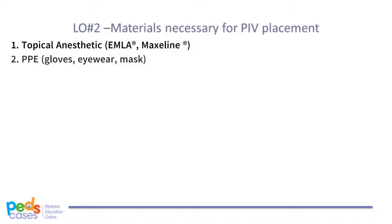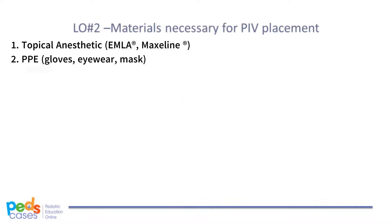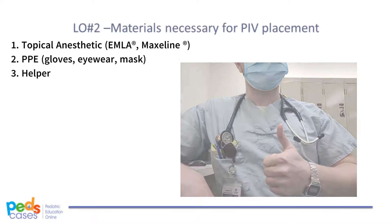Second, ensure you have proper personal protective equipment, which includes a pair of clean gloves and eye protection for yourself. Third, if a helper is available to assist you, this can make the process easier, especially when first learning to place IVs. It is always better to have help — even those experienced at peripheral IV insertion benefit from an extra set of hands.